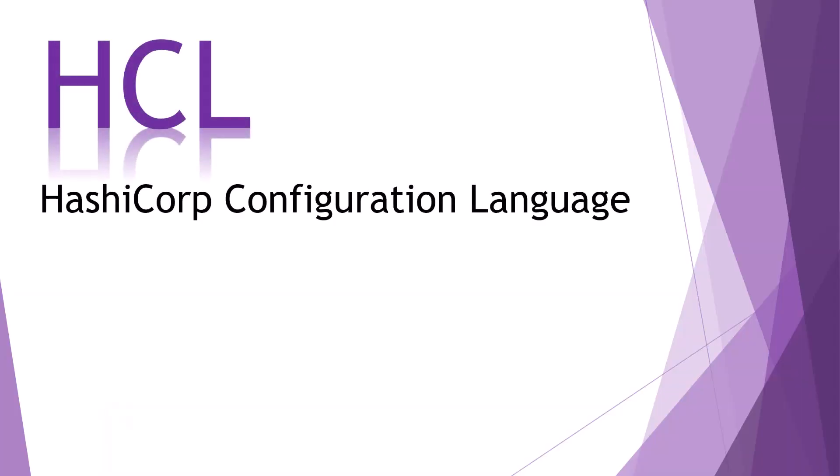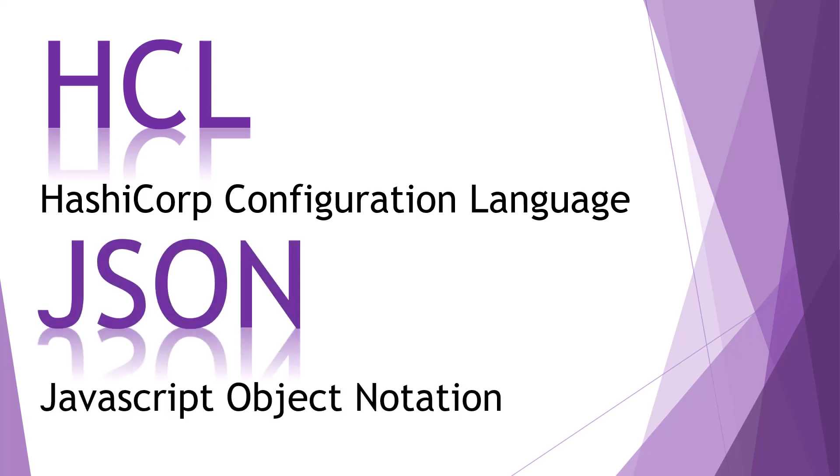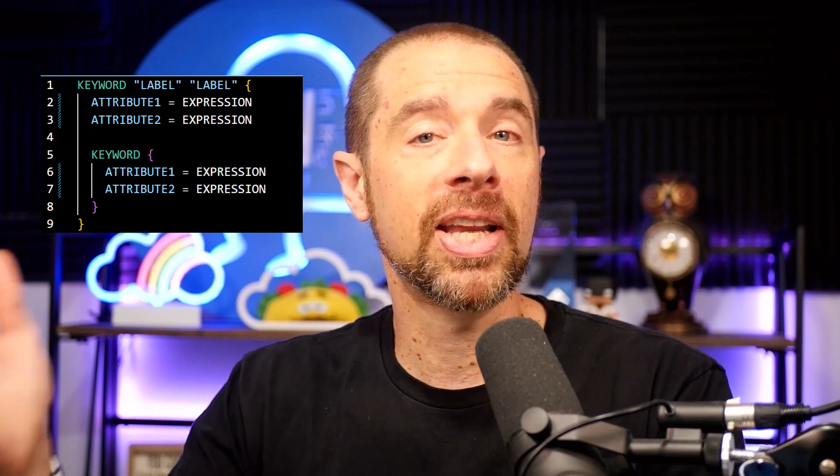Terraform configuration files define the infrastructure that Terraform is meant to manage. They are written in either HashiCorp Configuration Language or JSON, which stands for JavaScript Object Notation. JSON configuration files are typically written by another program, so you will be dealing with HCL files like 99% of the time. The HashiCorp Configuration Language is a declarative, domain-specific language that is meant to be both human-readable and machine-friendly.